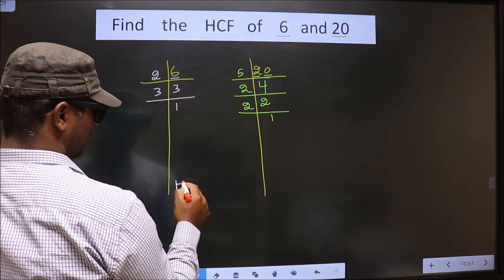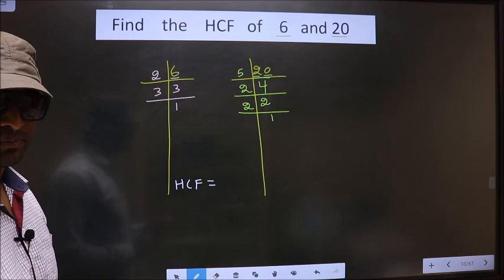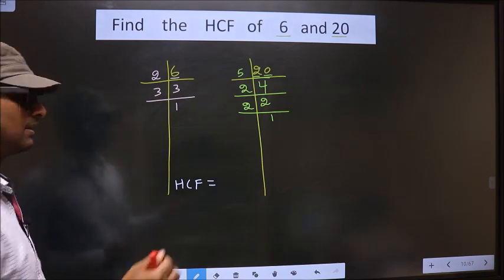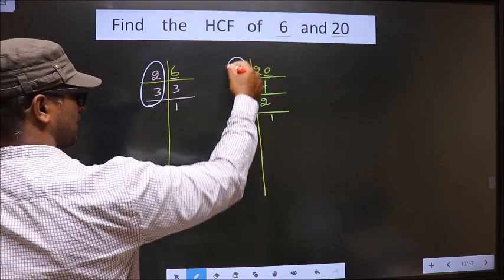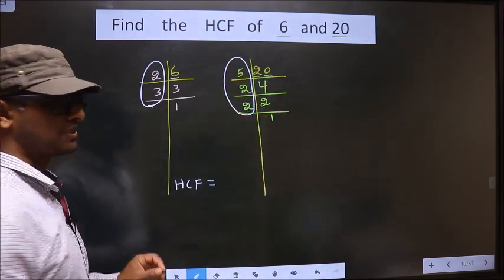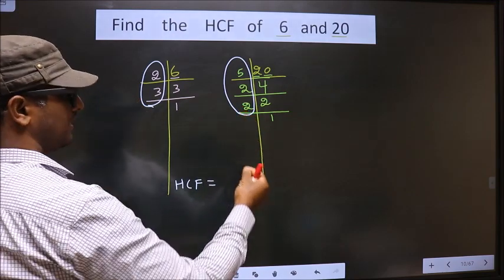So, HCF is the product of numbers present here and also here. So, now we should find the numbers present in both these places. So, let us find.